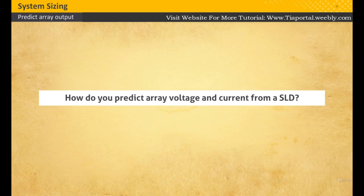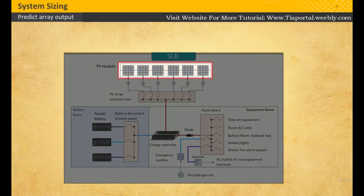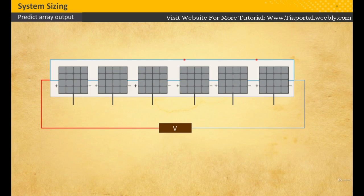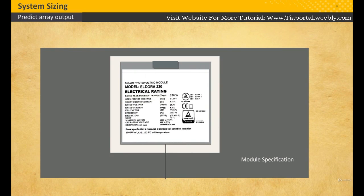In this video you will learn how to predict array voltage and current from an SLD. Each line of the array is called a string. Each module in a string is connected in series.